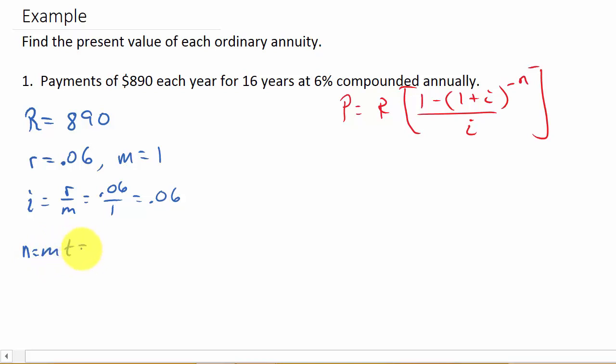N is M times T. So M is 1, so that's 1 times T, and that's the number of years. So that's 16. And so 1 times 16 is 16.